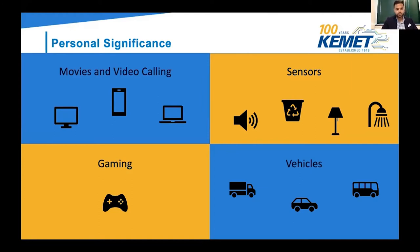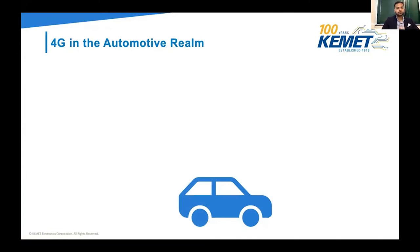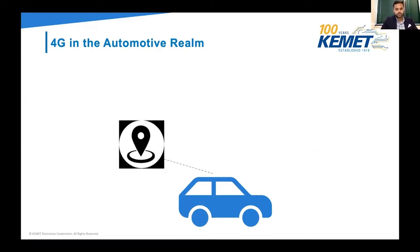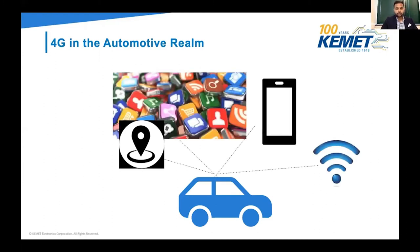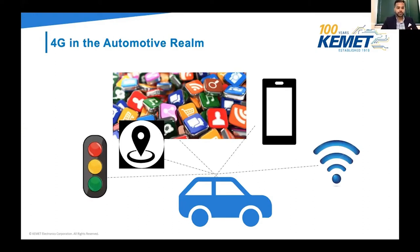The automotive industry is significant because of the increased number of autonomous and electric vehicles. We already have 4G implemented in most vehicles with GPS and in-car Wi-Fi. We're able to connect to multiple devices, and some newer models even have live traffic light updates — though that's probably not a great feature for aggressive drivers.